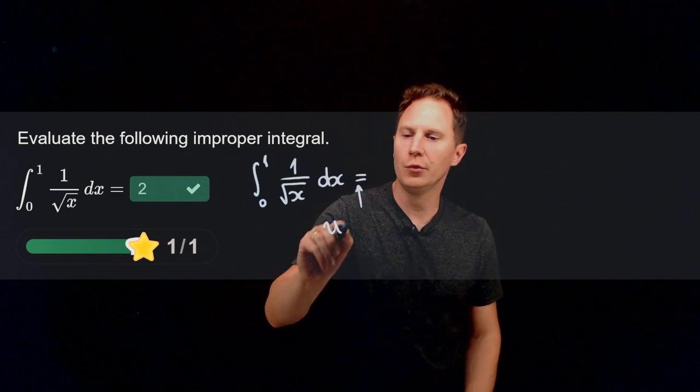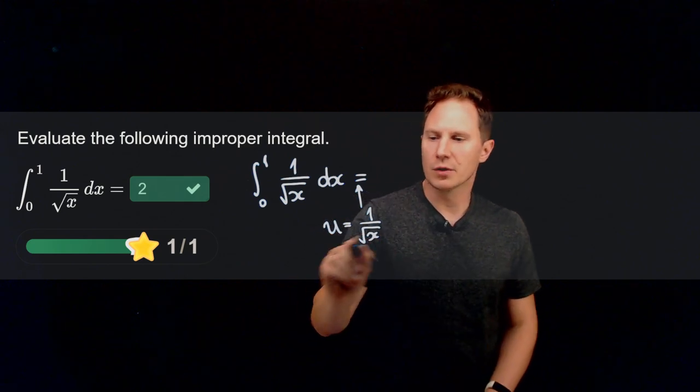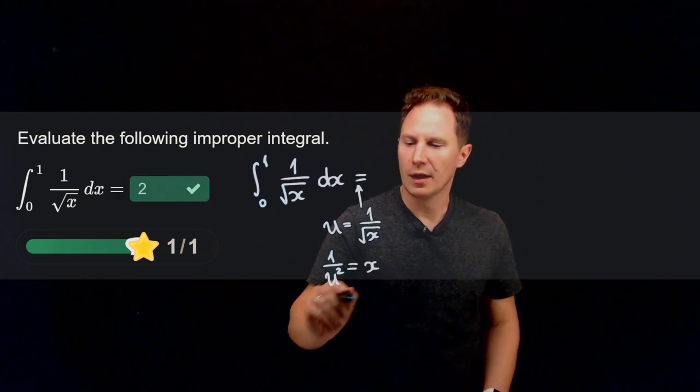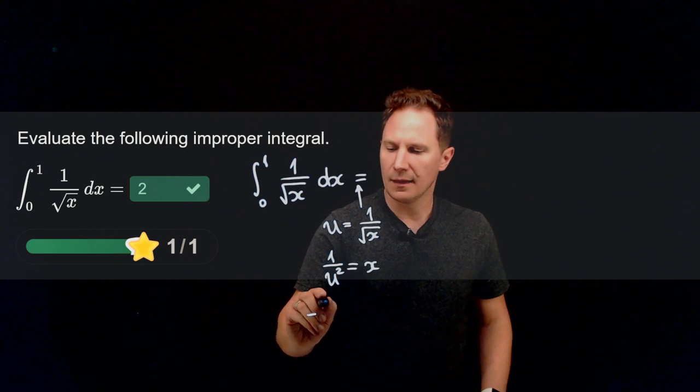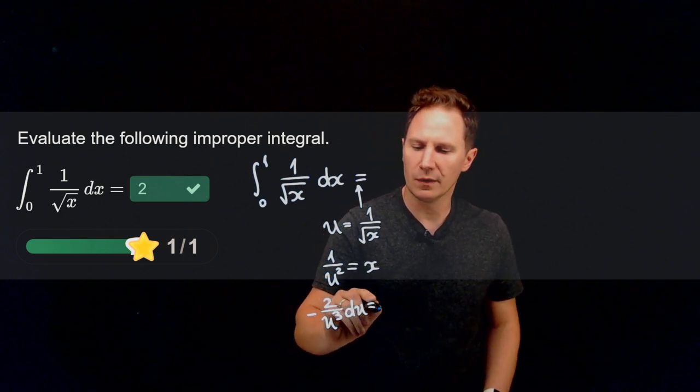Let the new variable u be 1 over root x. That of course means that 1 over u squared is x, and then negative 2 over u cubed du is what dx is.